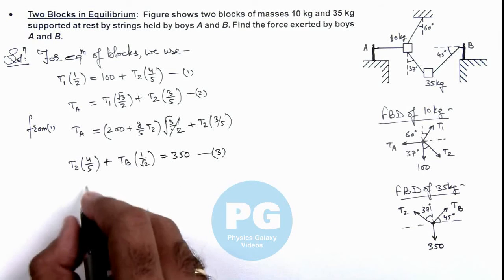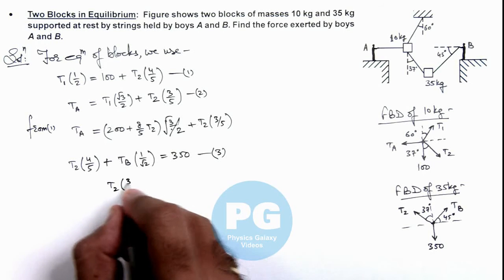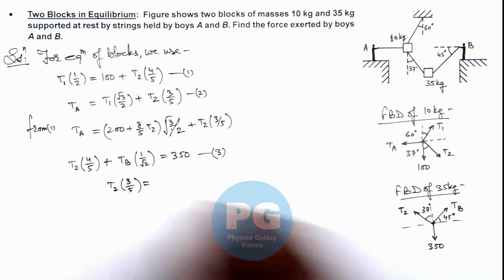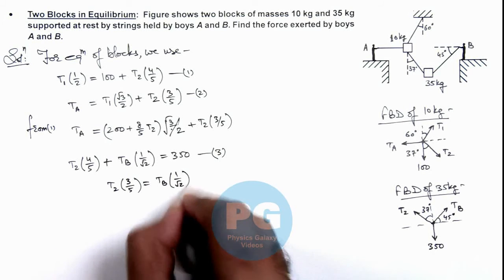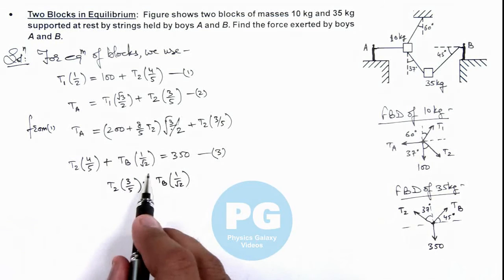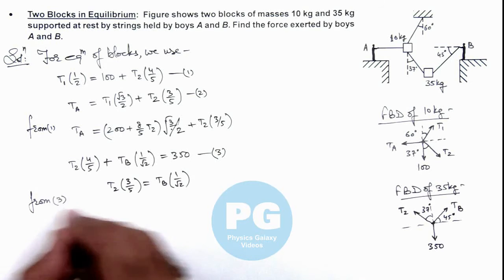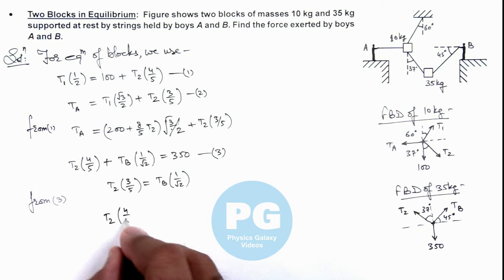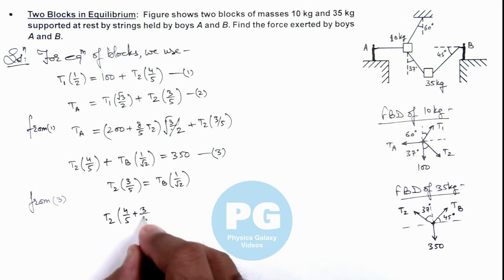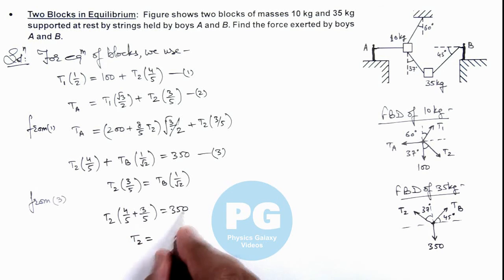In the horizontal direction: T2 sin 37°, which is T2 × (3/5), equals T_B cos 45°, that is T_B × (1/√2). So T_B × (1/√2) = (3/5)T2. Substituting into equation 3, we get T2 × (4/5) + T2 × (3/5) equals 350. Simplifying, (7/5)T2 = 350, giving T2 = 250 newtons.